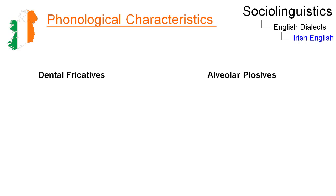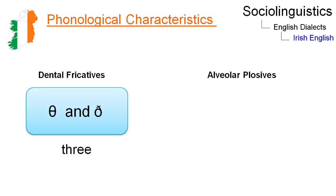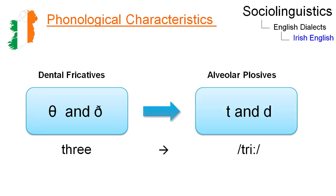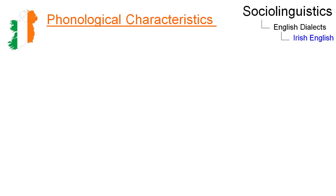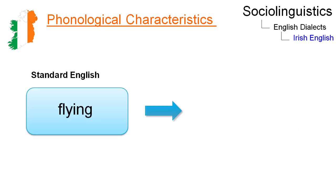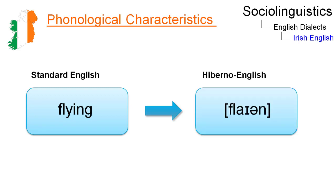Phonologically, Irish English shows several distinct characteristics. For instance, dental fricatives are often replaced by their alveolar-plosive counterparts, as in 'tree'. Furthermore, the ending '-ing' is often spoken as '-yn', as in 'flyon'.